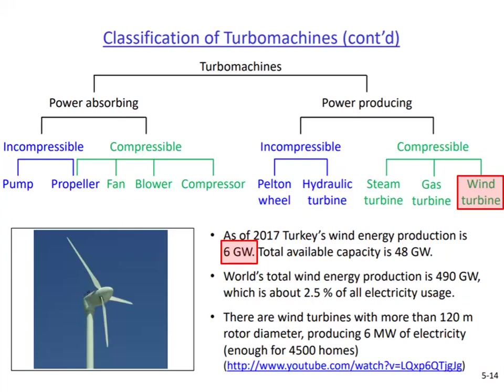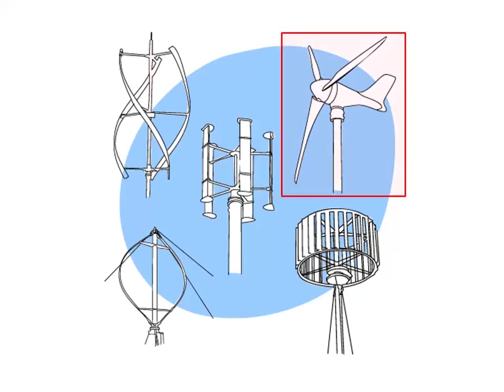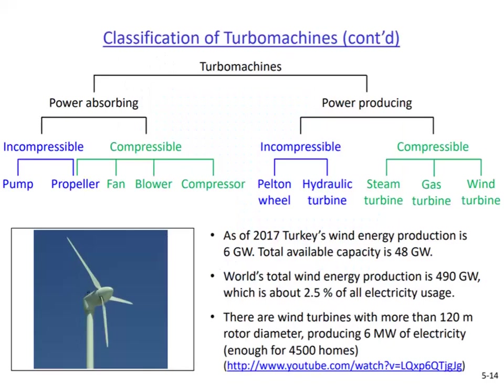The total available wind energy capacity of Turkey is known to be 48 gigawatts — more than half of the electricity Turkey currently produces from all its resources. The world's wind production is about 600 gigawatts as of 2020, which is about five percent of the world's current electricity demand. There are several different wind turbine types with vertical and horizontal rotating shafts, but today the most commonly used design is the horizontal axis wind turbine with three blades.